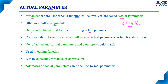The actual parameter will transfer that value to the user-defined function — that is, to the formal parameter in the function header. Data can be transferred to a function using actual parameters, and the corresponding formal parameters will receive the actual parameter values in the function definition, that is, in the function header of the function definition. The number of actual and formal parameters and their data types should match.